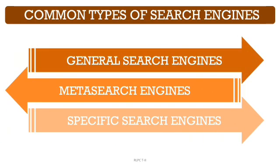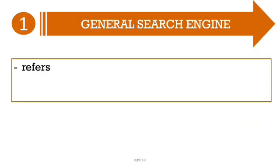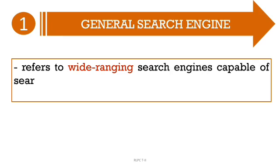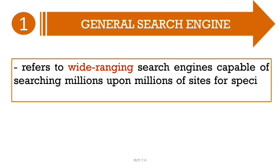There are three common types of search engines one may use. These are general search engines, meta search engines, and specific search engines. General search engines refers to wide-ranging search engines capable of searching millions upon millions of sites for specific information.